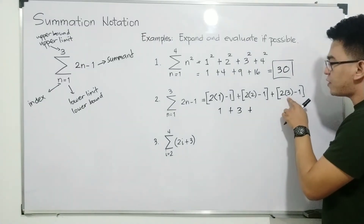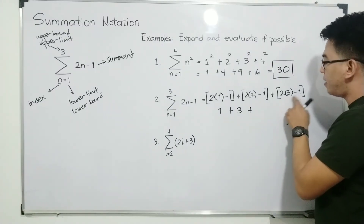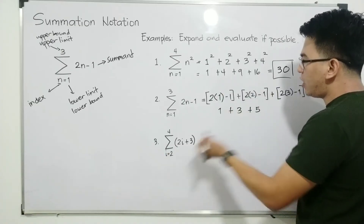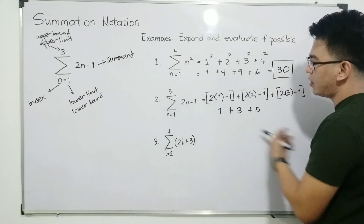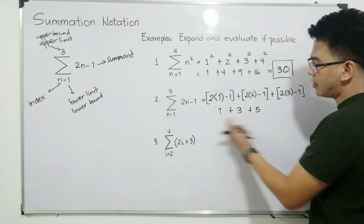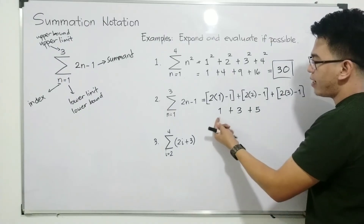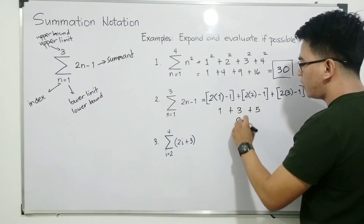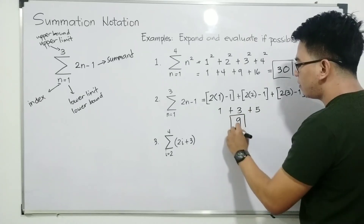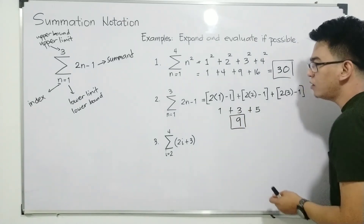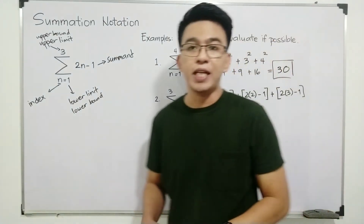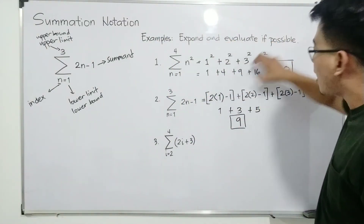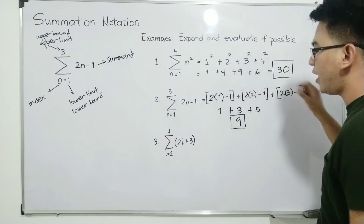Plus, 2 times 3 which is 6, minus 1 — this will give us 5. Now, to evaluate the summation, we need to sum this up: 1 plus 3 is equal to 4, plus 5 — this will give us the answer of 9. So the answer for item number 2 is simply 9. These are the expanded form and ito naman yung evaluated form.